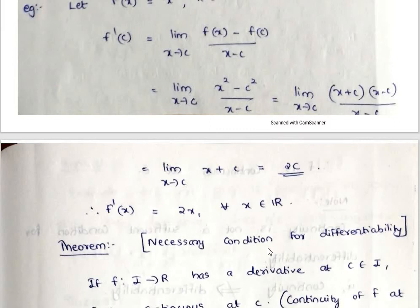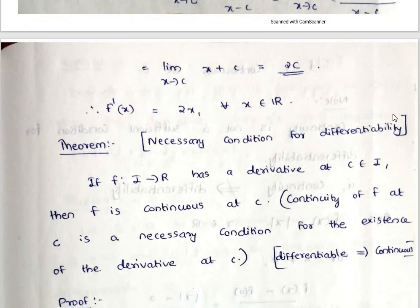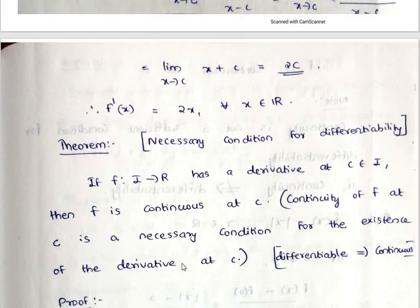Next is the necessary condition for differentiability. We have necessary and sufficient conditions. The necessary condition for differentiability means: if f from I to R has a derivative at c in I, then f is continuous at c. If f is differentiable at c, then f is continuous at c. That is, continuity of f at c is a necessary condition for the existence of the derivative at c. In other words, differentiable implies continuous.